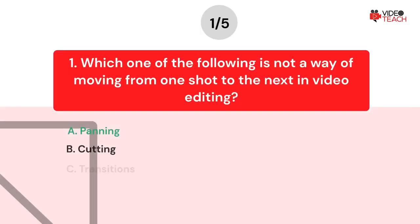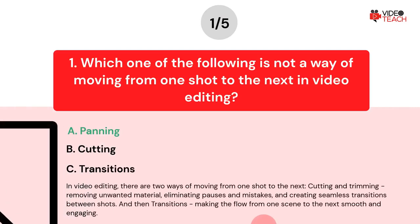The correct answer is option A. In video editing, there are two ways of moving from one shot to the next. Cutting and trimming: removing unwanted material, eliminating pauses and mistakes, and creating seamless transitions between shots. And then transitions: making the flow from one scene to the next smooth and engaging.